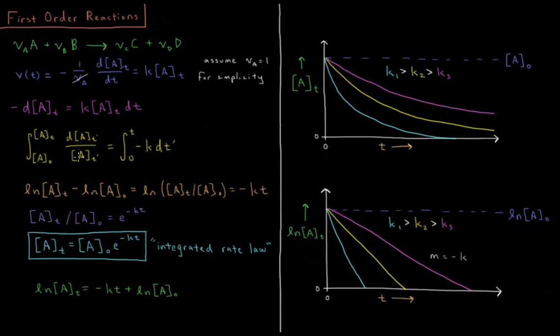dA over A, that's going to give us log of A. So we have log of A(t) minus log of A naught. And this is equal to log of x minus log of y is the log of x over y. So this is equal to the log of A(t) over A naught. And that's equal to integral of dt is just t. So t minus zero or minus kt on this side.